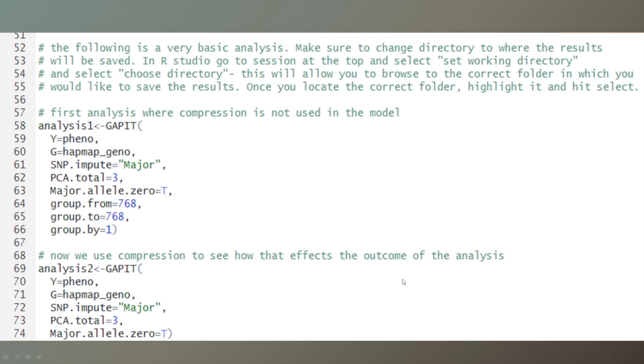And this bottom one is if you did. Compression is a default setting in GAPIT and it does the groupings by 10. And so that's one of the things that you'll have to play around with when you analyze your own data.